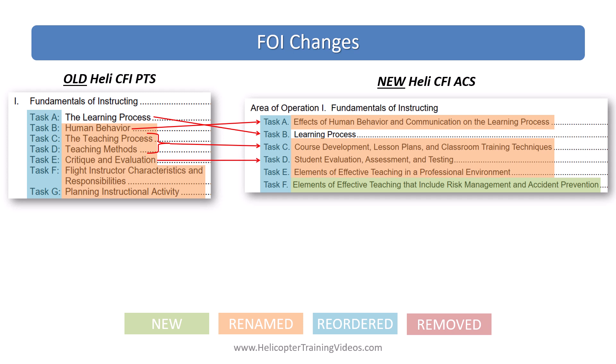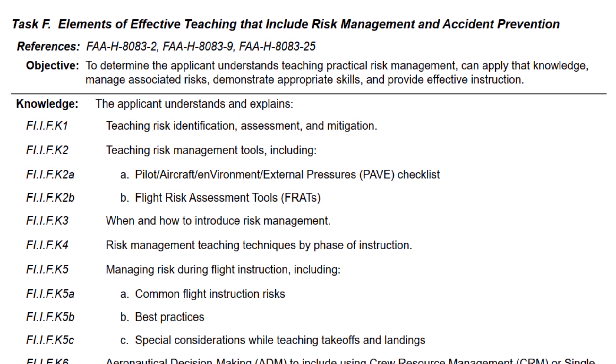Critique and evaluation becomes 'student evaluation, assessment and testing.' Flight instructor characteristics and responsibilities becomes 'elements of effective teaching in a professional environment.' Planning instructional activity also gets combined into Task C: course development, lesson plans and classroom training techniques. We also have a new task — Task F: elements of effective teaching that include risk management and accident prevention.